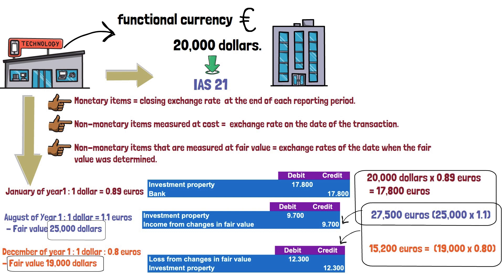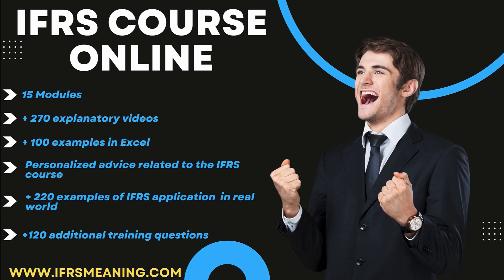When an asset is measured at fair value, the reduction in the value of an asset of this nature has the connotation of a decrease in its fair value and not the connotation of impairment, unlike assets measured at cost. Finally, if you want to learn IFRS, be an expert and make a difference, we remind you to review our course on International Financial Reporting Standards.